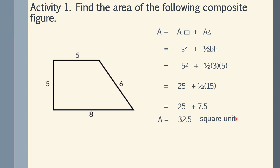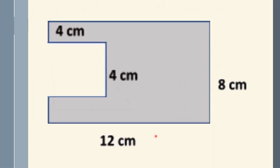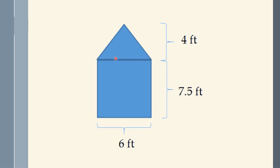If no unit is given, just write square units. For the next figure, the idea is to get the full rectangle with dimensions 12 and 8, find its area, and then subtract the area of the inner square. For another figure with a rectangle and triangle, the area of the rectangle is 7.5 times 6, and the area of the triangle is one-half times 6 times 4. These are part of your activities in the module.